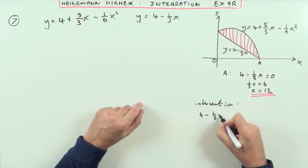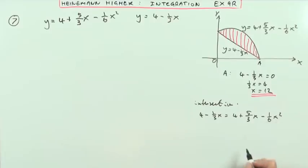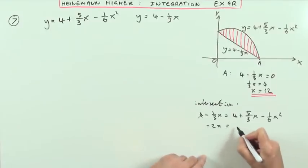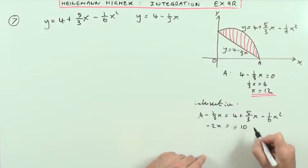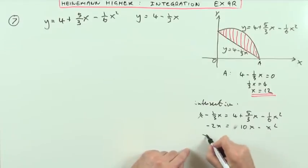So I've got 4 minus a third x equals 4 plus 5 upon 3x minus a sixth of x squared. Well, straight away those fours can go. Fractions multiply by 6, so I've got negative 2x equals 10x minus x squared. Bringing that over.